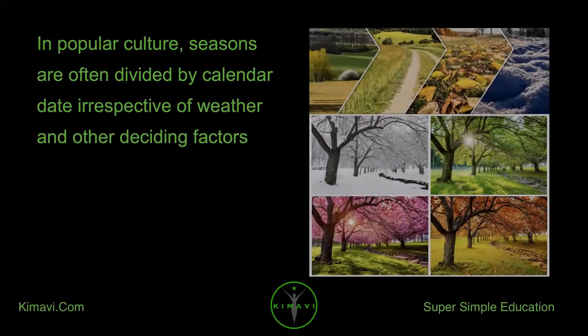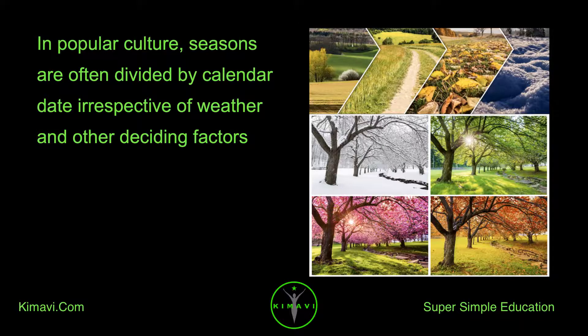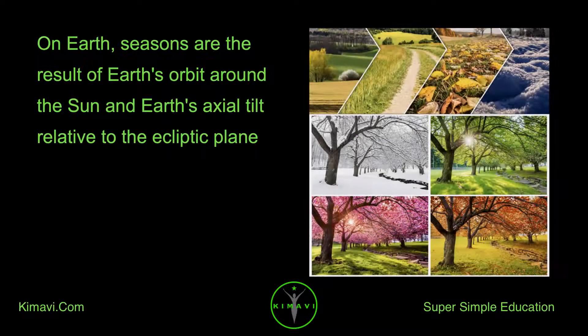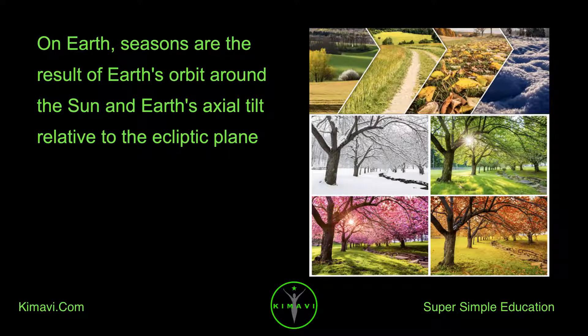In popular culture, seasons are often divided by calendar date irrespective of weather and other deciding factors. On Earth, seasons are the result of Earth's orbit around the Sun and Earth's axial tilt relative to the ecliptic plane.